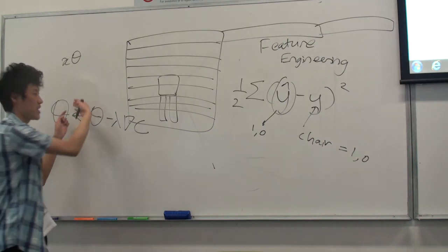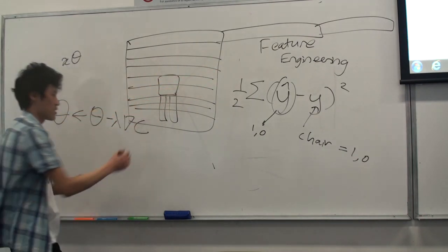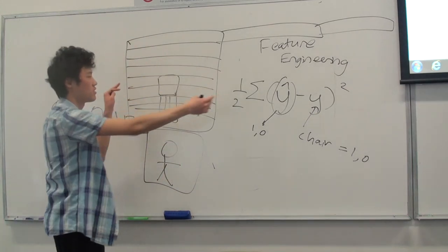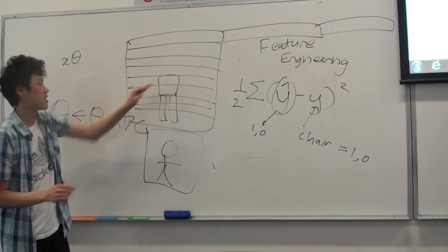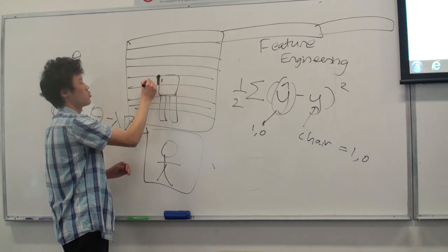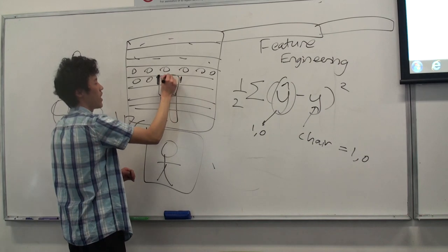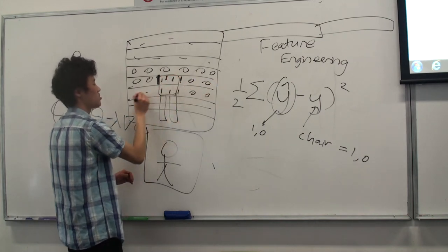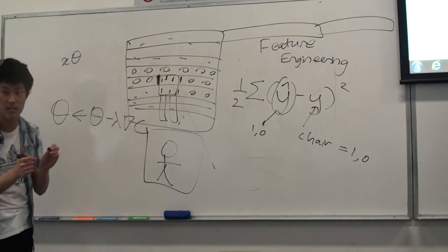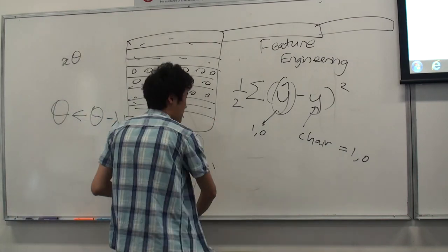The image pixels are just numbers — if there's an edge it's a 1, and empty regions are all zeros. Once you squish it into one row, you can put it into the algorithm. The second method is called flattening.